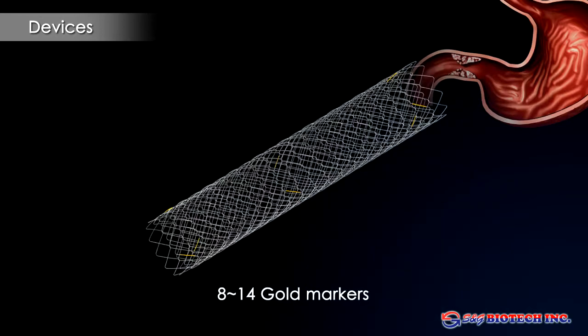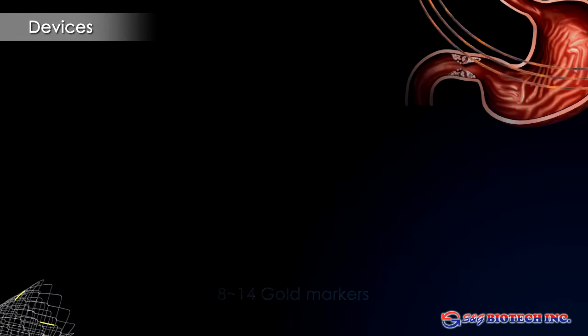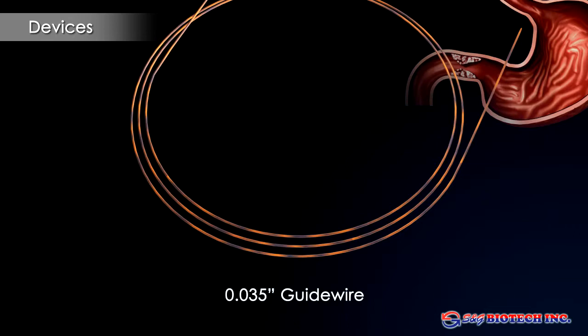Tubular gold markers on the stent increase radiopacity and visibility on fluoroscopy. A hydrophilic guide wire is recommended for crossing the stricture, but a stiffer wire is required for stent placement. Combination wires with a stiff shaft and a hydrophilic tip avoid the need for wire exchanges.